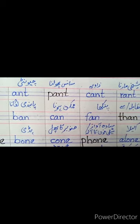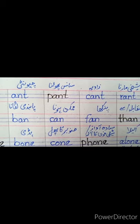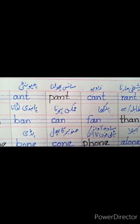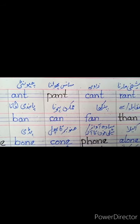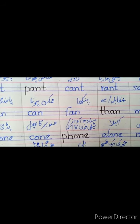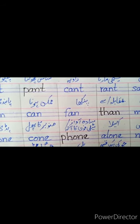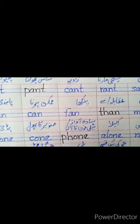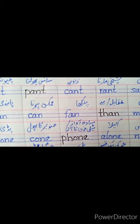Second one is 'can'. Can means ممکن ہونا — ہم کہتے ہیں 'I can do it' — میں یہ کر سکتا ہوں یا کر سکتی ہوں. Third one is 'fan'. Fan means پنکھا — F, A, N. دیکھیں A, N پہ end ہے.